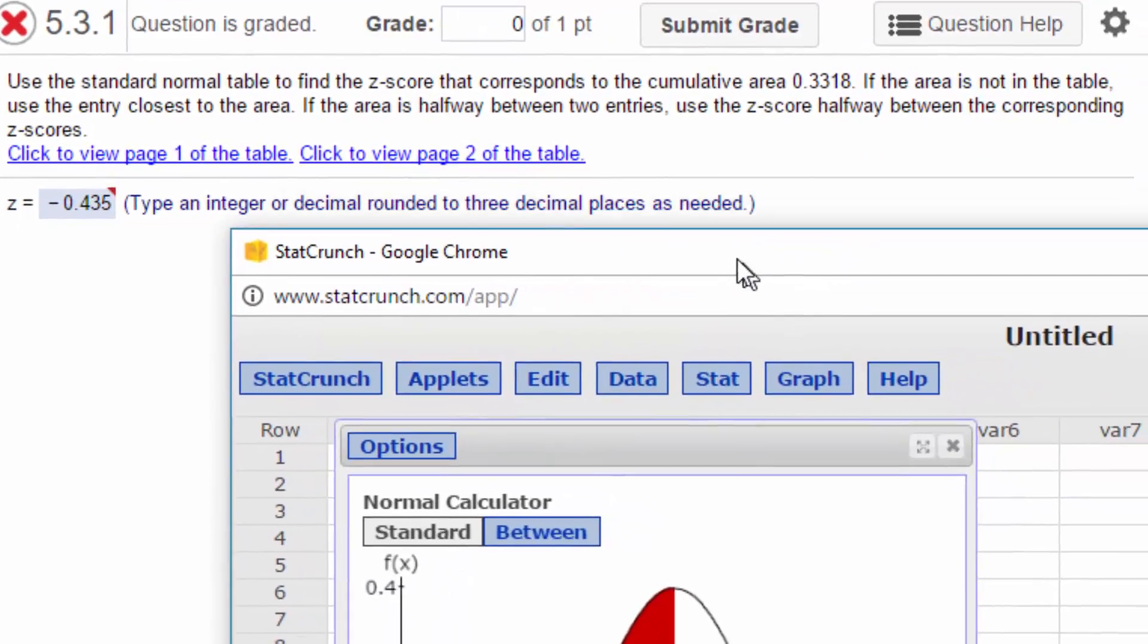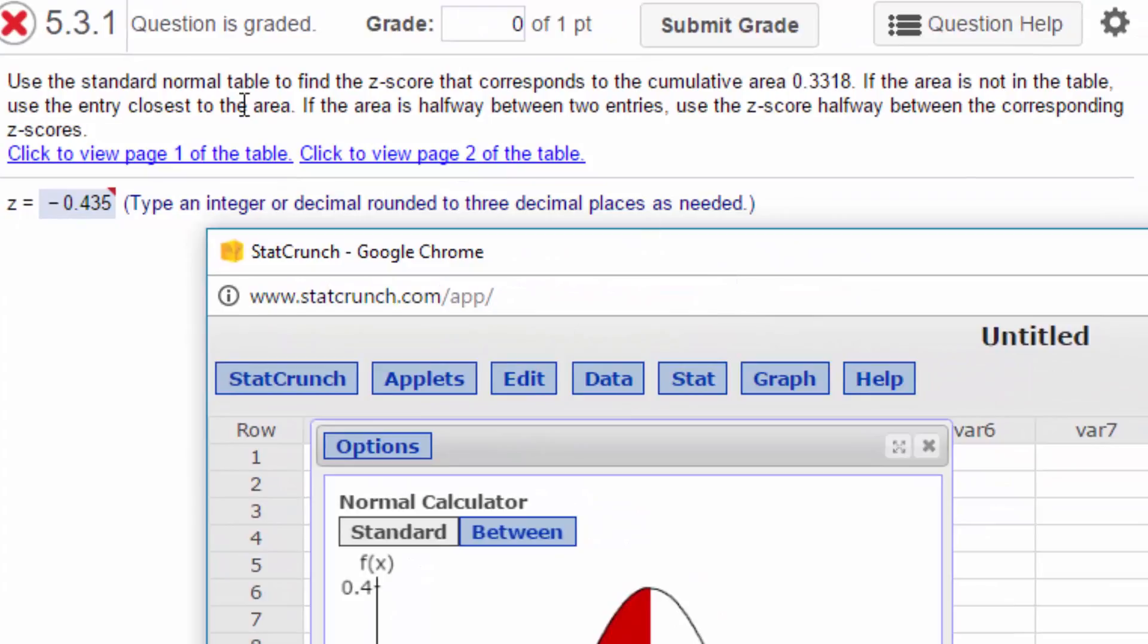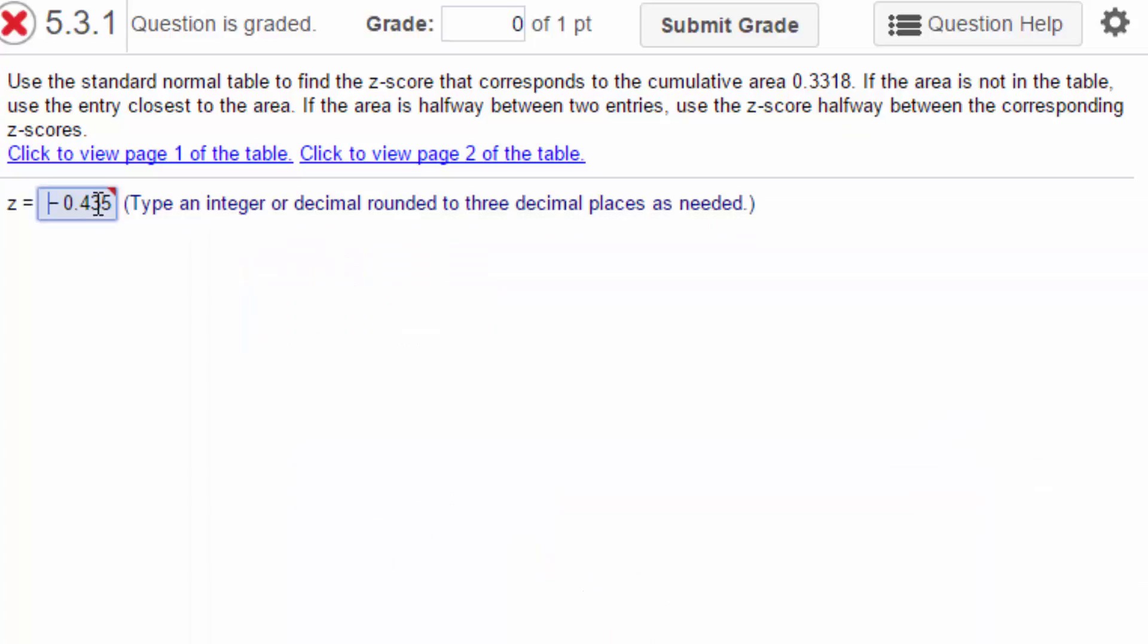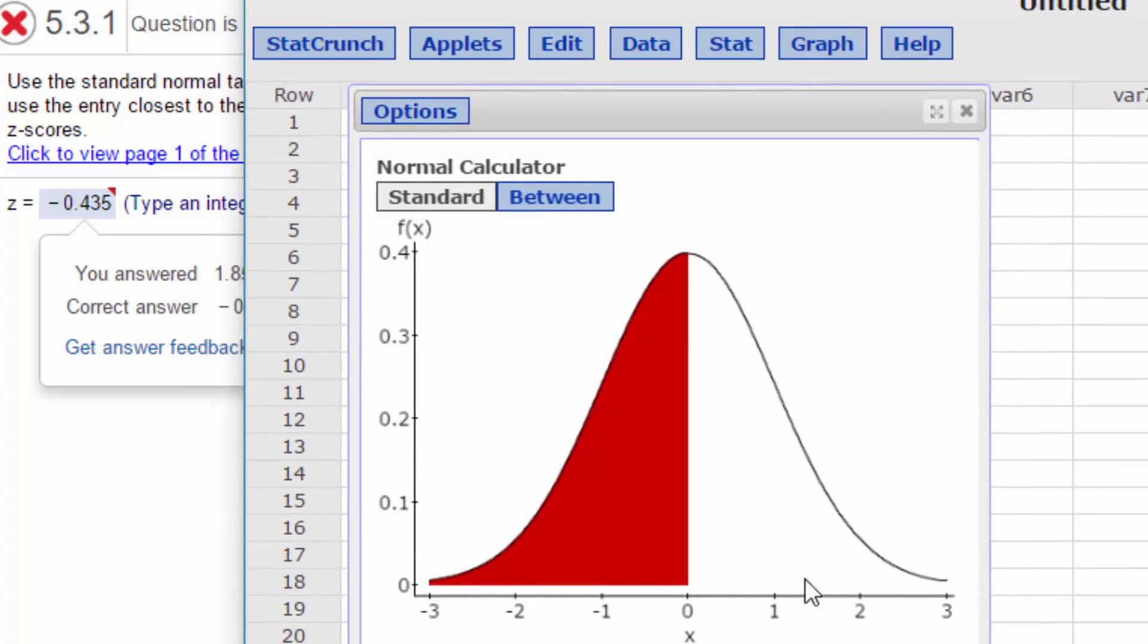Let's go back and look at the problem. The first one says find a z-score that corresponds to a cumulative area of 0.3318. I notice you answered 1.85, which is a positive value of z which would put it over here on the right side of the curve. Remember, the area under the curve, which is the probability, always has to be less than one, and so that means anything below the mean of zero, a minus z-score, has to be less than 0.5 for the probability.